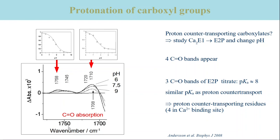The motivation for this experiment is the fact that proton counter transport increases at high pH, obviously because the residues no longer become protonated at high pH. The ability to protonate is described by the pKa value of a molecule or molecular group. When the pH is equal to the pKa value, 50% of the molecular groups are protonated and 50% are unprotonated. The lower the pH, the more groups are protonated.